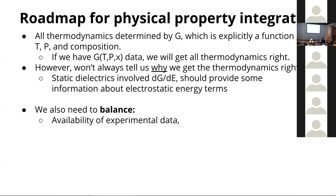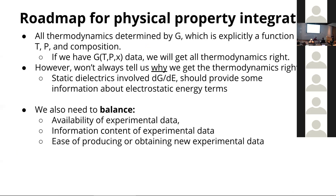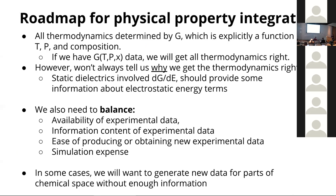We need to balance the information content of experimental data against its availability, the ease of producing new data when chemical coverage isn't good, and simulation expense. Some properties involve one five-nanosecond simulation of 2,000 molecules; others involve free energy calculations taking hundreds of nanoseconds. In some cases we'll want to generate new data for parts of chemical space that don't have enough information. There's going to be functionalities we don't have enough existing data for.